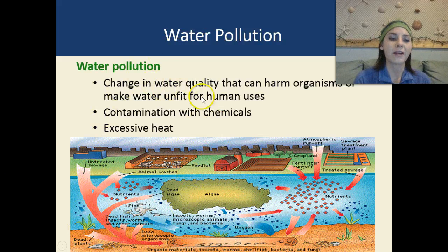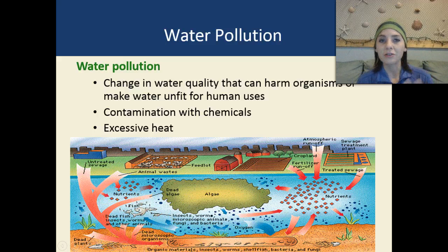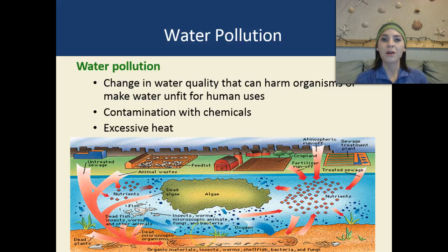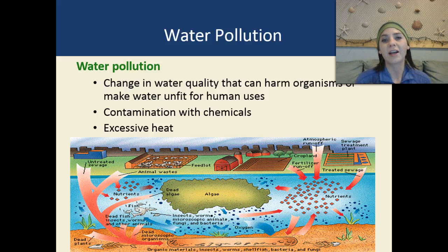Looking at this graphic, we have untreated sewage going into this river. The excess nutrients from that untreated sewage can cause huge algal blooms. A lot of times, that algae can actually get lodged in the gills of fish, and it can actually result in huge fish kills.